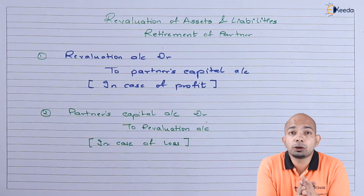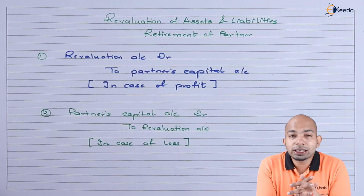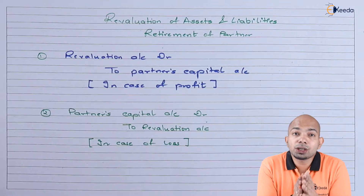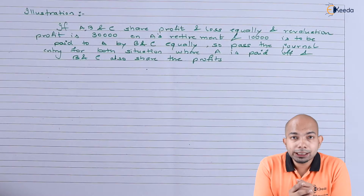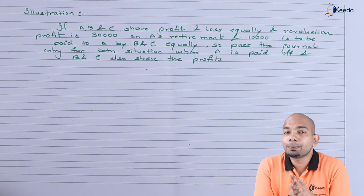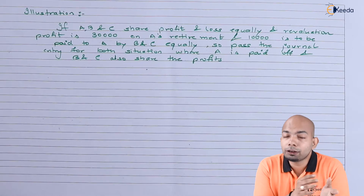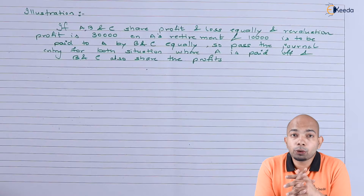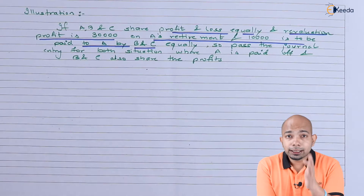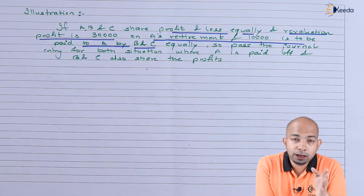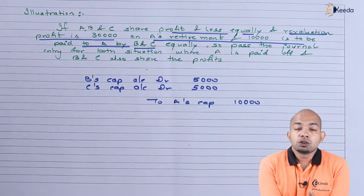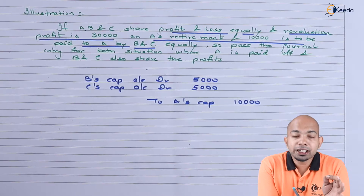These are the two basic journal entries to keep in mind when passing a revaluation account entry under the retirement scenario. Now let's go through an illustration. A, B, and C are partners who share profits and losses equally — in a 1:1:1 ratio. The question also states there is a revaluation profit of 30,000. On A's retirement, 10,000 is supposed to be paid to A by B and C equally. We have to pass the journal entry for when A retires.